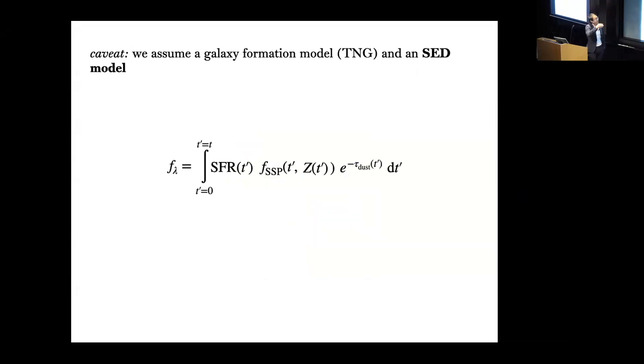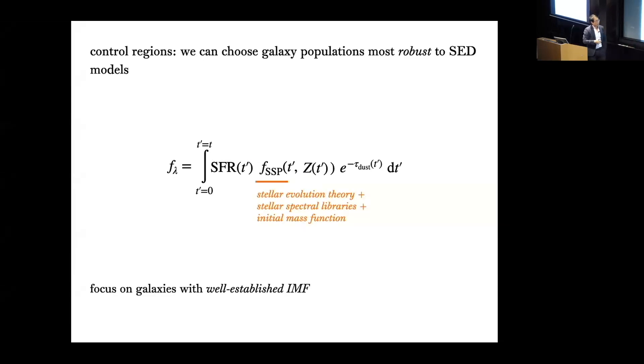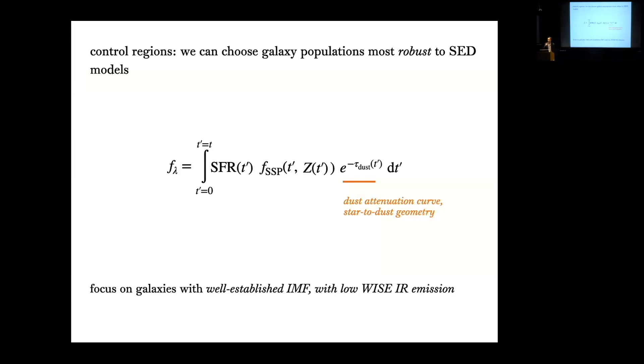The other assumption that we make is in the forward model part which is in the SED model. This is the equation for how we calculate the SED. As you can imagine there's a number of assumptions that go in there in terms of the stellar evolution theory, the spectral libraries, and the initial mass function. But again we can exploit this control region idea and focus on galaxies with for instance well-established IMFs. We can also target just galaxies with low infrared emission with little dust, so we can use this strategy to really select the galaxies where we're confident that we can robustly model.